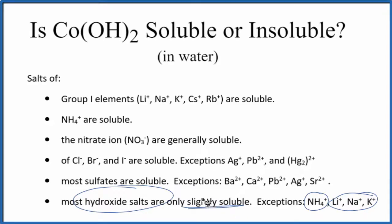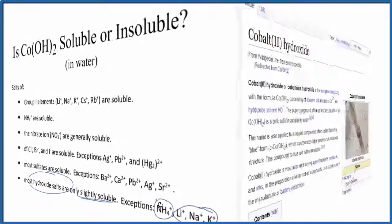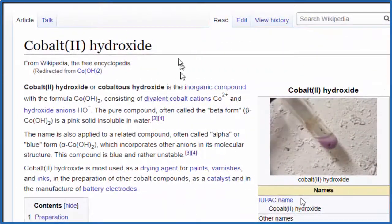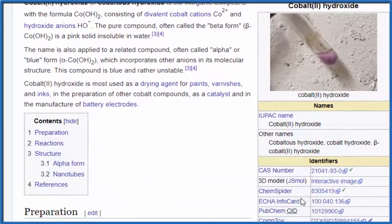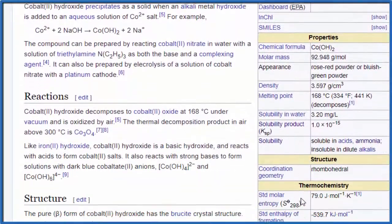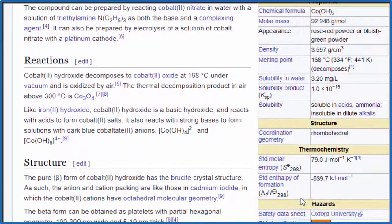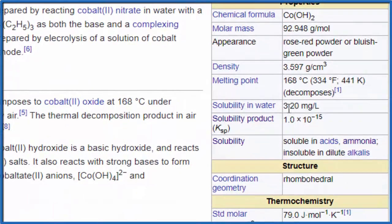We can also look at some data to make sure we have the right idea. Here's some data for cobalt-2-hydroxide — this is a little picture of it. Looking for solubility in water: the solubility in water is 3.20 milligrams per liter — slightly soluble, almost insoluble.